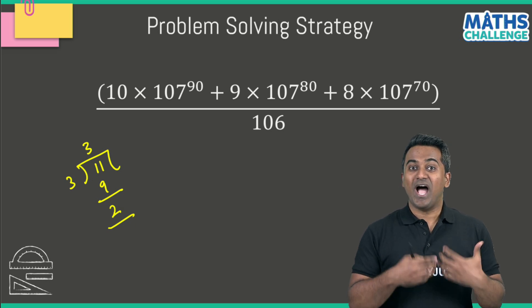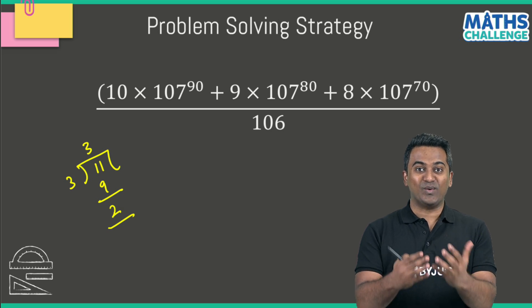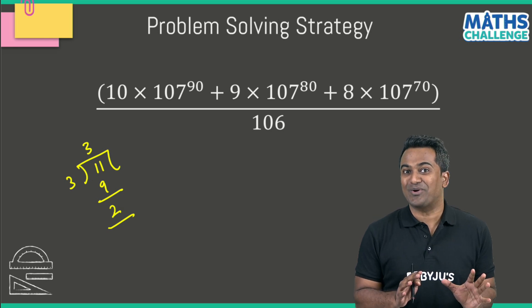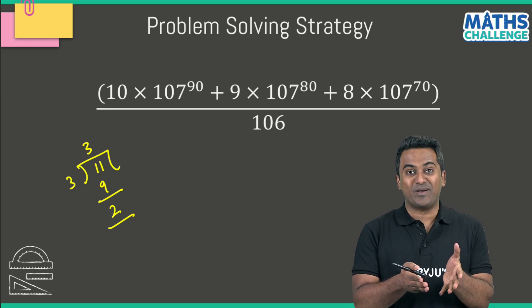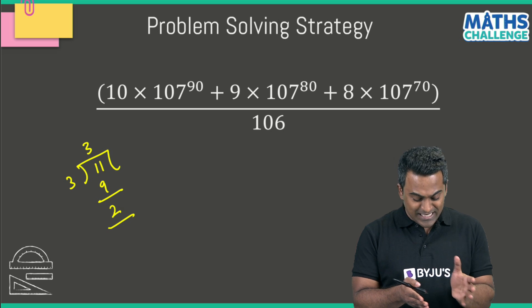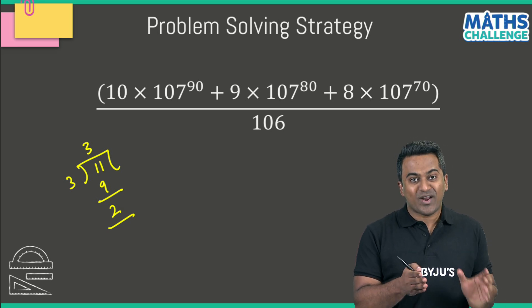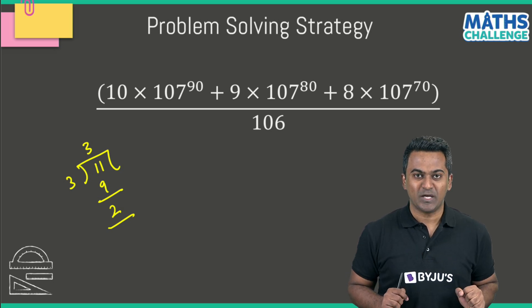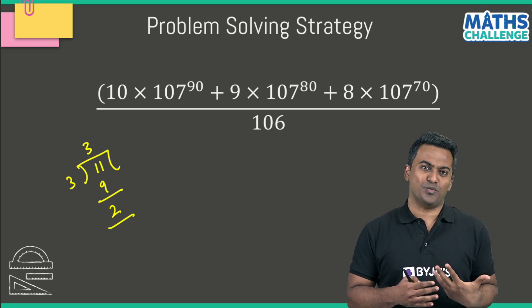So concept-wise, as I said, this is a fairly simple problem. But the challenging bit is how am I supposed to calculate the remainder? When I look at the numerator here, this is a scary looking numerator: 10 multiplied with 107 to the power 90 plus 9 multiplied with 107 to the power 80. These are very big numbers, so we need a different method.